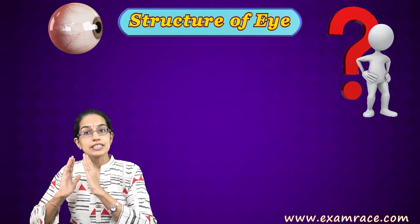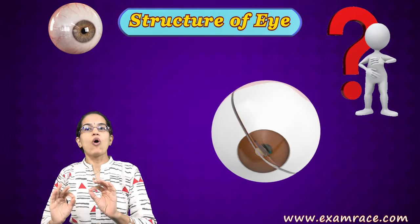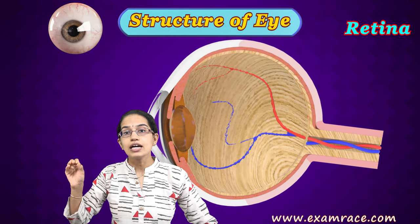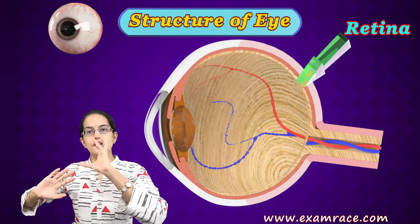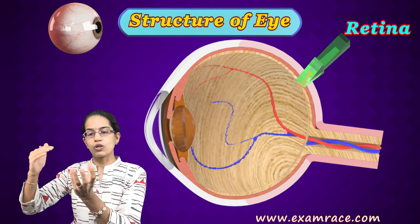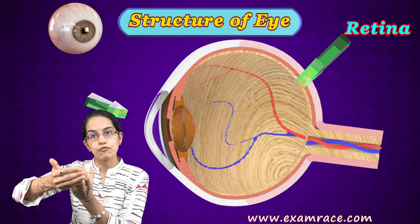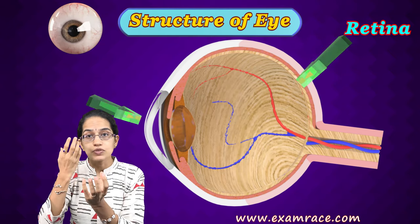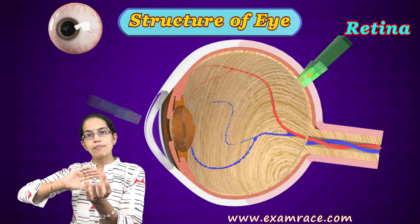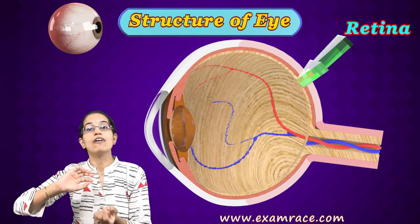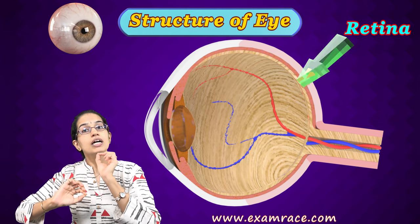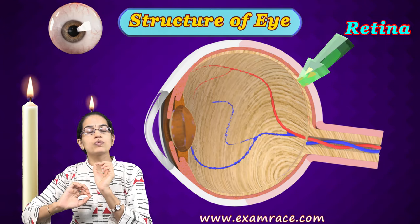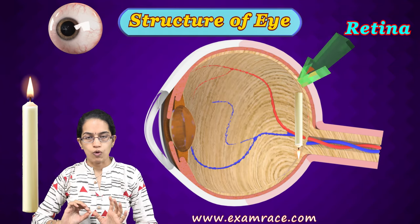Where does the image actually form? The image forms on the retina, which can be seen at the back of the eye. On this ball, the front has the pupil and iris visible to us, and on the back side we would have the retina. On this retina, the image would be formed.